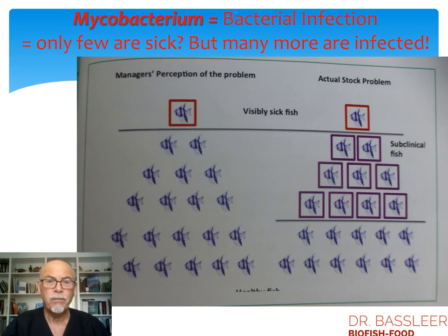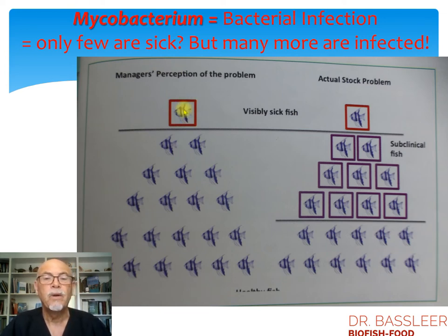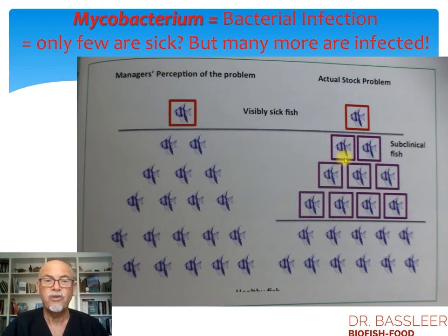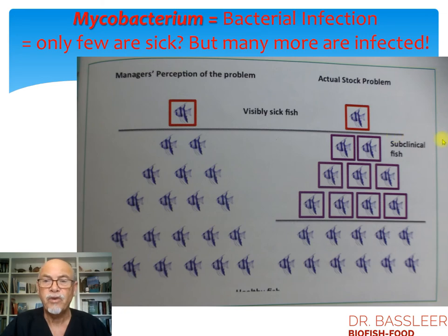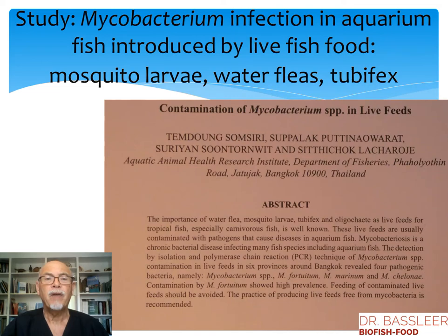So if you see mycobacterium on a fish — maybe one fish showing a red ulcer, or skinny appearance, or black spots in the organs — we have to be aware that if you look at the fish subclinically or send it to a laboratory, you'll find that 10 more fish also carry the disease. What you see with the naked eye means one is showing the disease clearly, but 10 more fish in your aquarium are carrying it, though not so heavily infected.